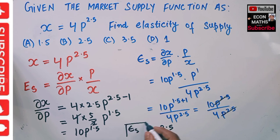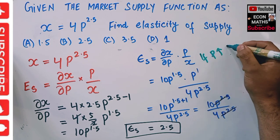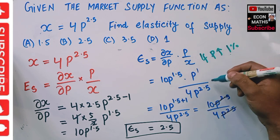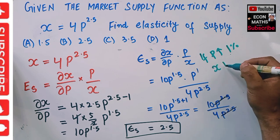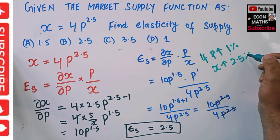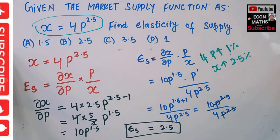So elasticity of supply is 2.5. To interpret it, it simply says that if price increases by 1%, quantity supplied will increase by 2.5%. In effect, this is a constant elasticity of supply. I hope I made myself clear in this video, thank you.